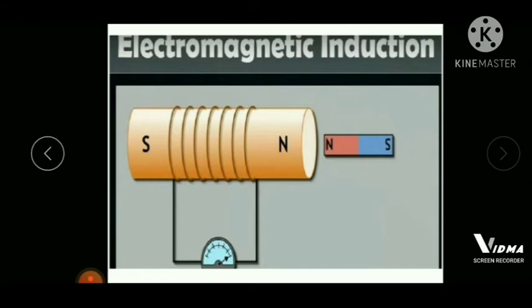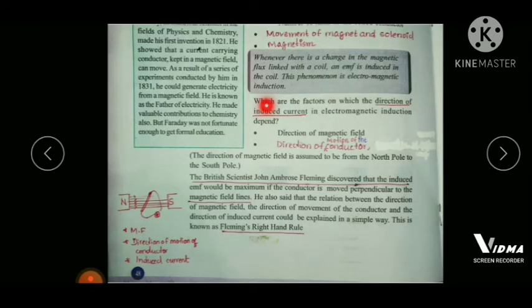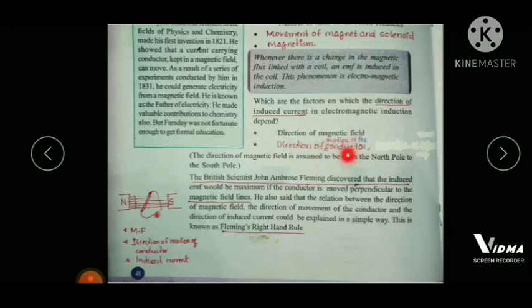Now let us see which factors determine the direction of induced current in electromagnetic induction. The direction of induced current depends upon the direction of the magnetic field and the direction of motion of the conductor.